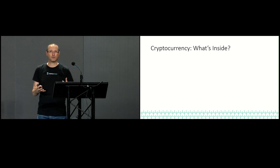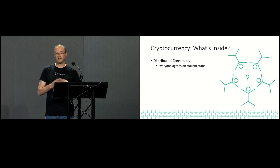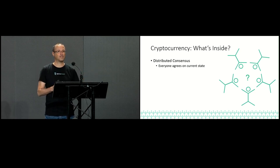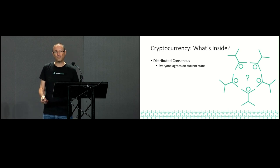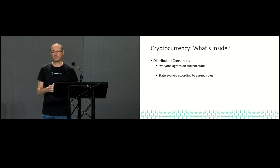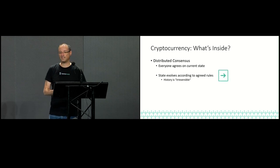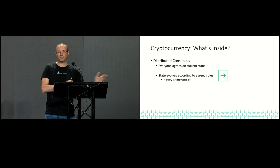So let's start with a little bit of introduction. What actually are the ingredients that make up a cryptocurrency? The most important thing is distributed consensus — some way to get everyone to agree on what the current state of the world is. When we're talking about a cryptocurrency, by world we mean where all the money is. If we don't agree where the money is, we don't have a cryptocurrency. We also have to agree on the rules of how this state evolves — specifically, it's important that history is irreversible.